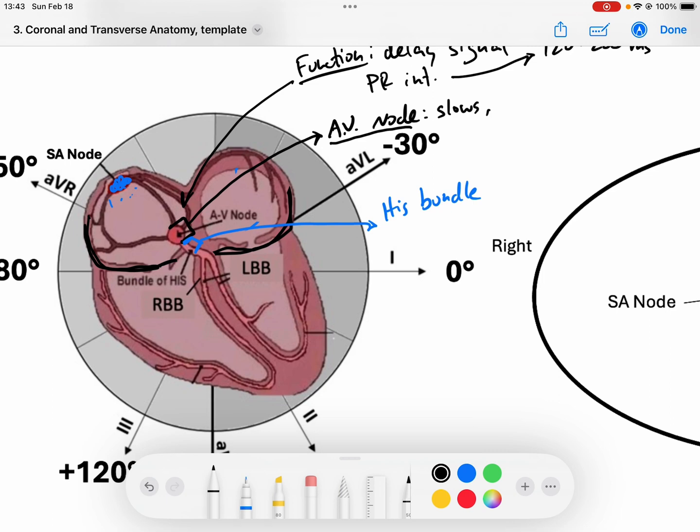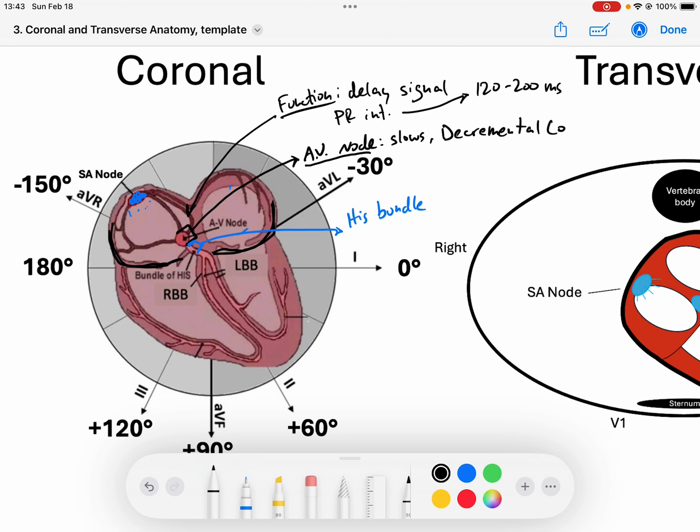The AV node also exhibits something called decremental conduction. And decremental conduction means that it's an interesting thing that the AV node does. It's a protective mechanism. And what it means is that when the rate increases, meaning that when the rate of stimulation, when the SA node, whenever the AV node gets stimulated more, it actually will decrease the speed of conduction. So this is why when we get really fast, rapid activation of the AV node, we don't send all of those signals just rapidly down to the ventricles. It slows it down. And so it's interesting that the more you get like a tachycardia, the slower the AV node will actually conduct that signal.